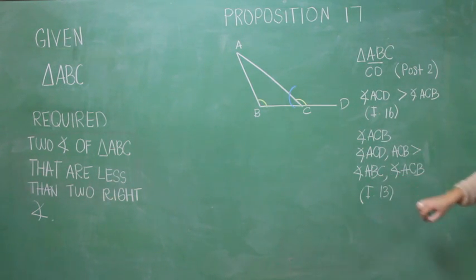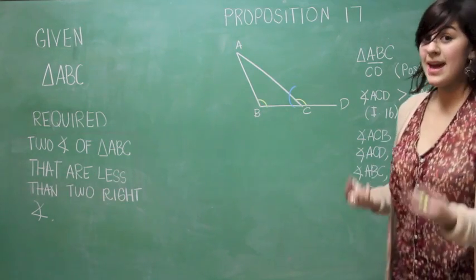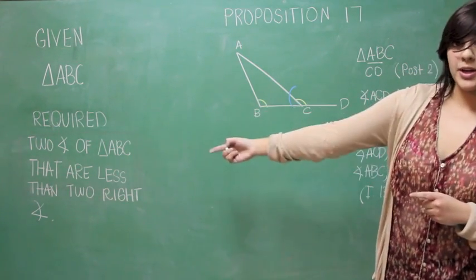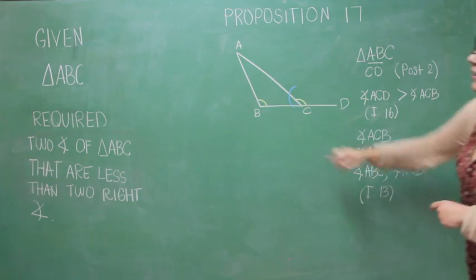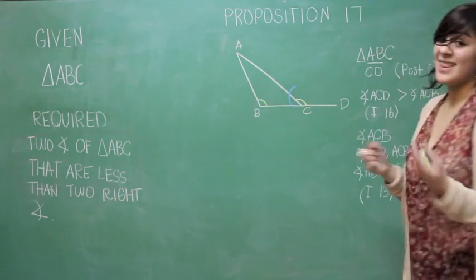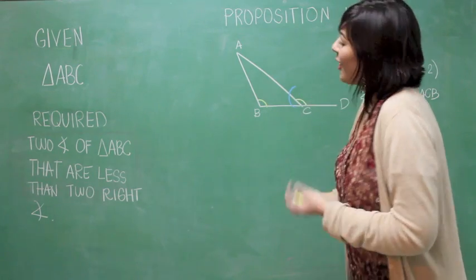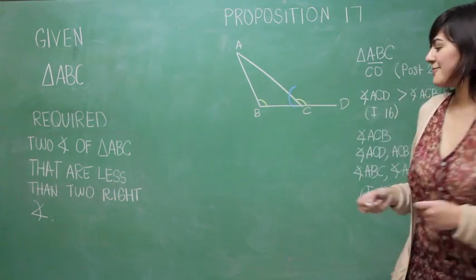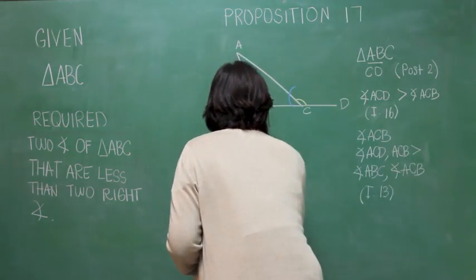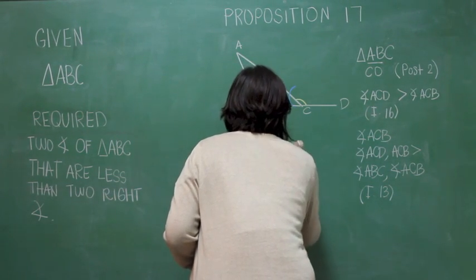The angle ABC and ACB are less than two right angles. That was what is required to do. But also, the angle BAC is less than two right angles and the angle ACB. So, we have proved what we have to do. Q.E.D.